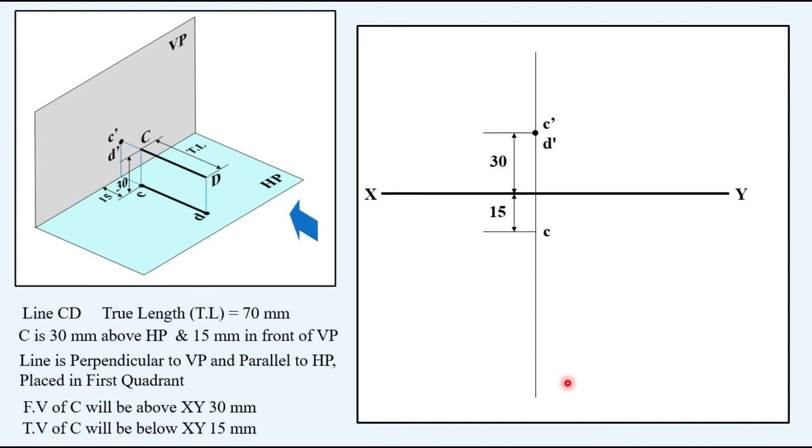Then taking 15 mm in front, having the top view of C. From there, take the true length and obtain another end D and mark the line from C to D. This is the required top view of the given line CD. In this manner, you have obtained the front view and top view of the given line, which is perpendicular to VP and parallel to HP.